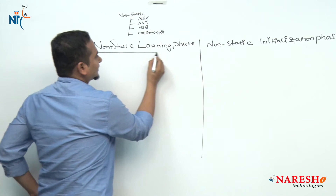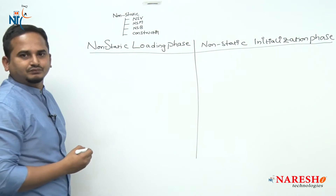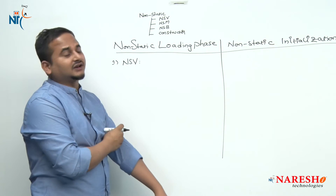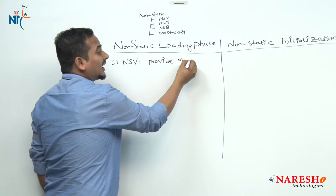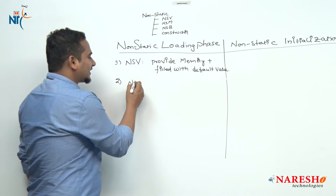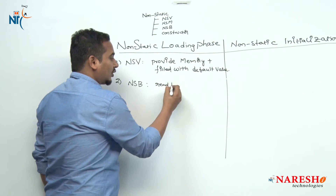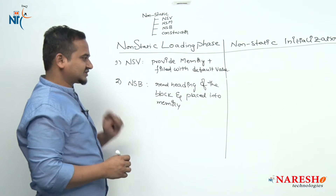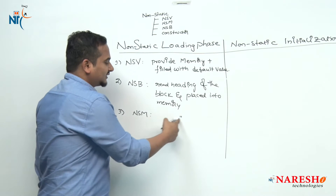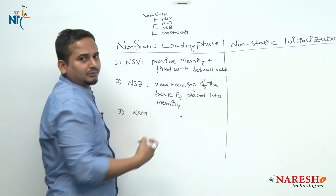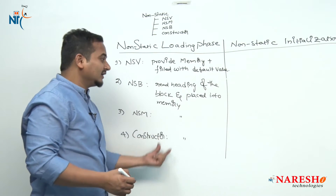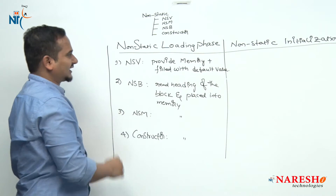These are the two phases executed during object creation. In the loading phase: if the data is a non-static variable, JVM will provide memory and fill it with a default value. If the data is a non-static block, JVM will read the heading of the block and place it into memory. If the data is a non-static method, JVM will read the heading of the method and place it into memory. If the data is a constructor, the constructor heading will be read and placed into memory. This is exactly the non-static loading phase.